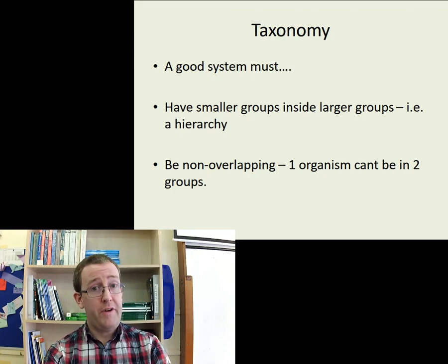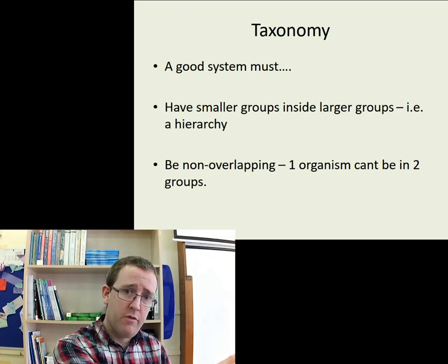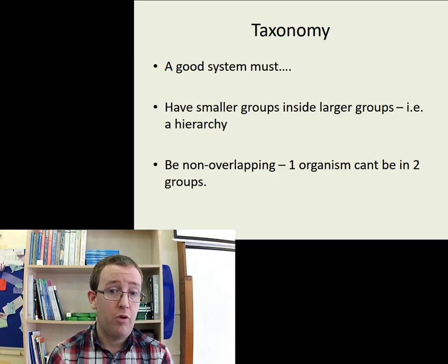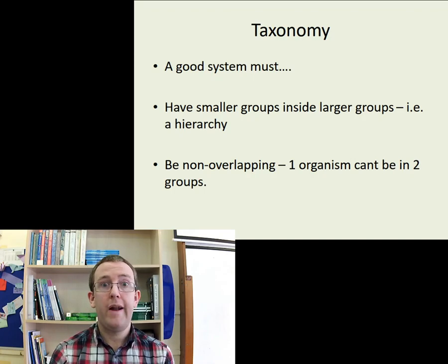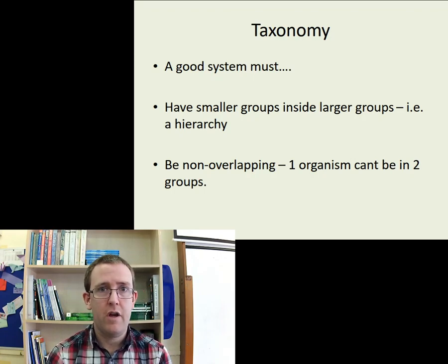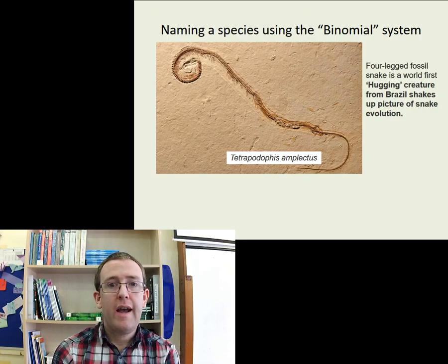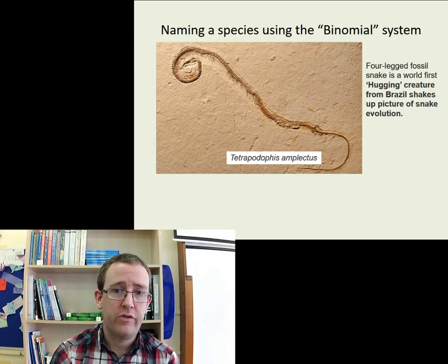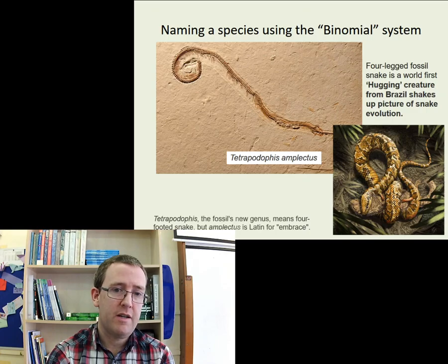A good taxonomic system needs a couple of features. Generally it's got smaller groups inside larger groups — a hierarchy. And the groups must be non-overlapping, so one organism can't be in two groups. The duck-billed platypus illustrates this: it has fur so we call it a mammal, but it also lays eggs so it might be considered a reptile. We can't have it in both groups, so for physiological and anatomical reasons we decide on balance it's a mammal, despite laying eggs rather than having live young like most other mammals. That's what makes a good taxonomic system — though there will always be edge cases. So how do we name organisms? This is what we call the binomial system.